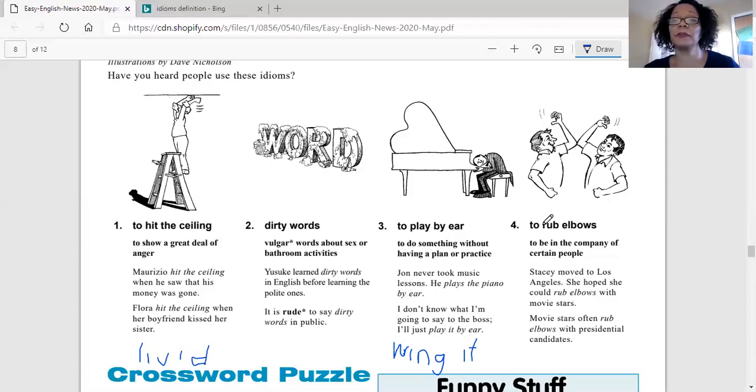Okay, number four talks about rubbing elbows. Rubbing elbows. This one's funny to me because my parents, when I visit them, I can't really hug and kiss them. So my father will come up to me and he'll give me an elbow and we'll do this kind of little elbow tap thing instead of hugging. But it doesn't really mean to do that though. When you say I'm going to rub elbows with someone, it doesn't mean we're just going to smush our elbows together. It means to be in the company of certain people.